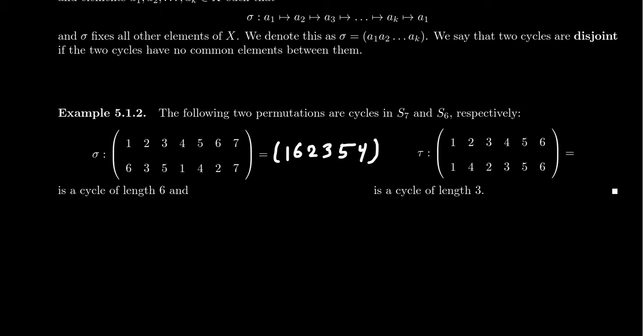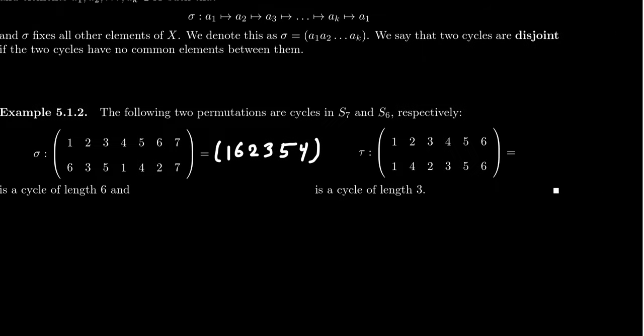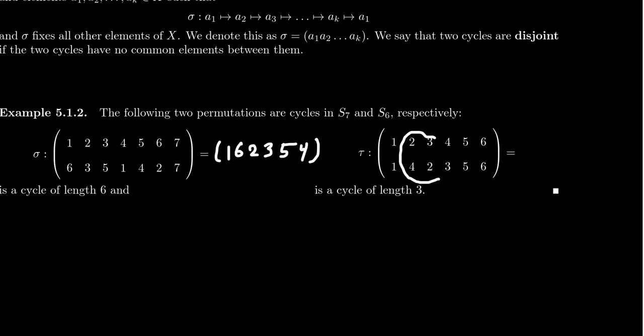If we look at tau, for example, this is a permutation in S_6. I claim this is also a cycle. It's actually a 3-cycle in this situation. You'll notice that elements 1, 5, and 6 are actually fixed. And so the elements 2, 3, and 4 are what's going to get cycled around. You see from here that 2 goes to 4, 4 goes to 3, and then 3 goes back to 2.